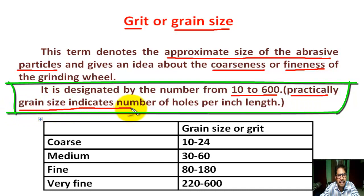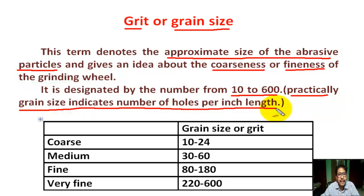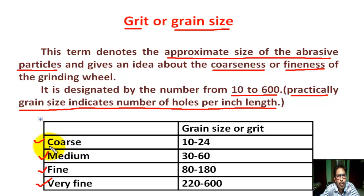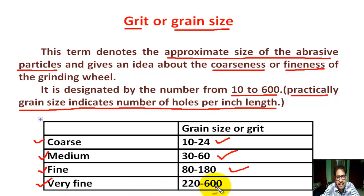For division: coarse grain size is 10 to 24; for medium grain size, 30 to 60; for fine grain size, 80 to 180; for very fine grain size, 220 to 600.